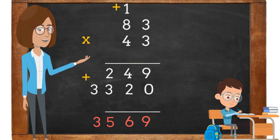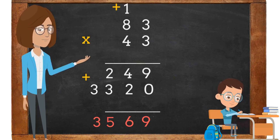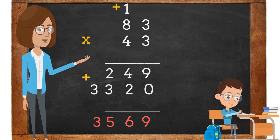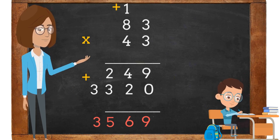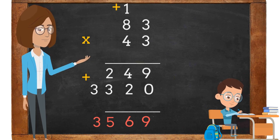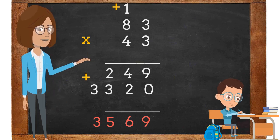The last step in this problem will be to add. 9 plus 0 is 9. 4 plus 2 is 6. 2 plus 3 is 5. We do not have any numbers above the 3 in the thousands place, therefore we are going to bring the 3 down next to the 5.